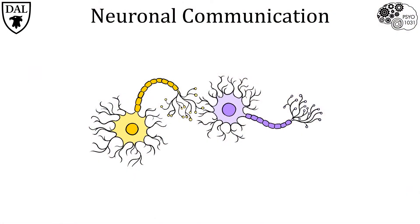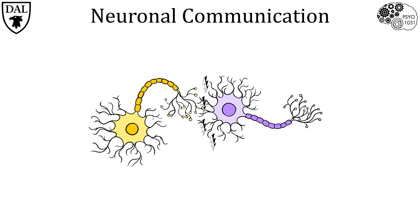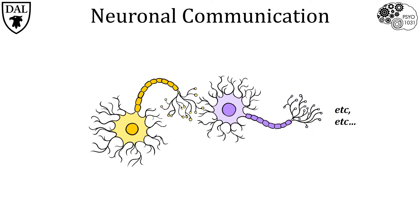Neurons have two important jobs. One is to transmit a message to a target across a synapse using neurotransmitters as messengers. The type of electrical signal resulting from this is called a graded potential. If the graded potential is the right size and type, then it allows the neuron to do its second important job: to carry the message along the length of its axon to its target using a type of electrical signal called an action potential. When an action potential reaches the axon terminals, it triggers neurotransmitter release, which continues the cycle of producing a graded potential and then an action potential in the next targeted neurons.